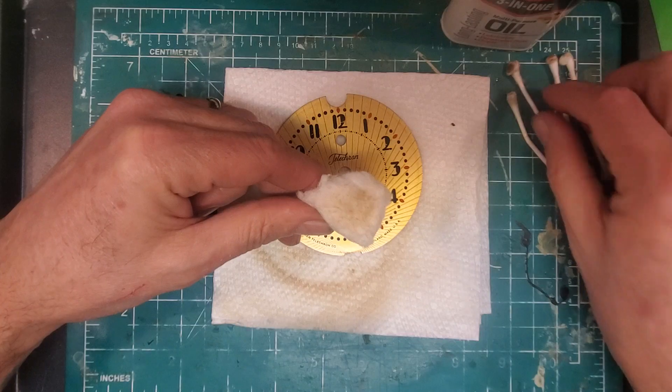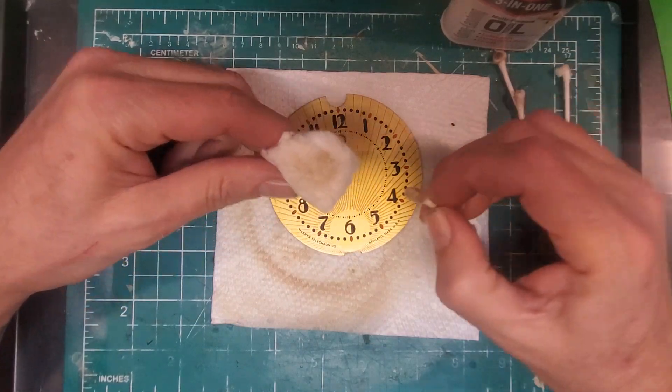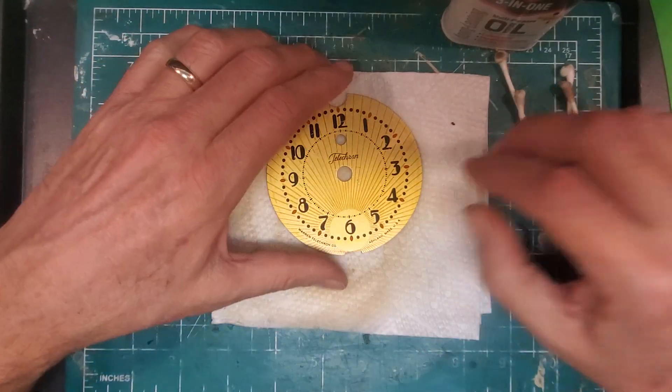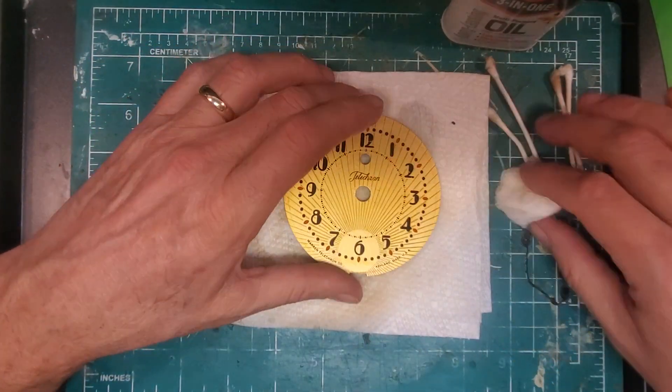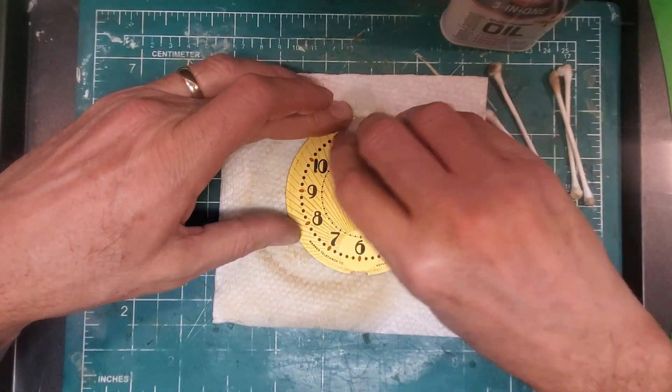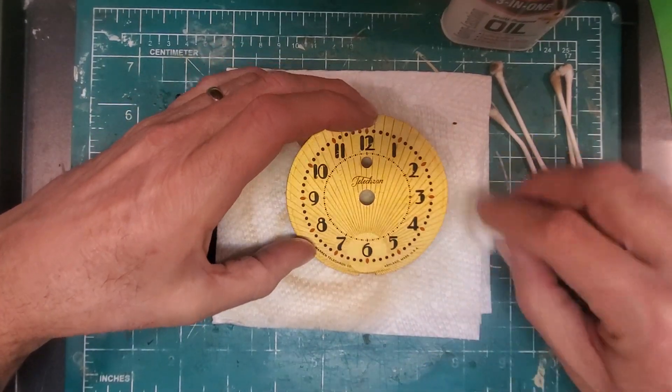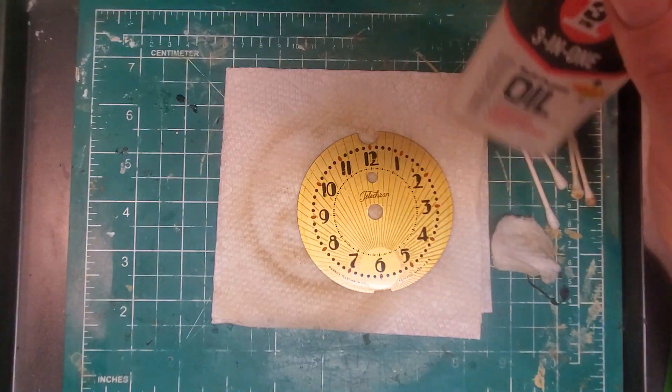You may be able to see some of that right there, that's the oil that was on here. So if you happen to have one of these you're working on and you want to get that oil off, before you go and ruin it like I did with Brasso, try three-in-one oil on it.